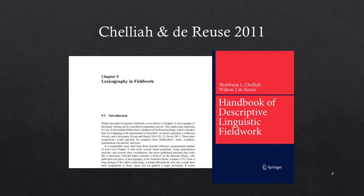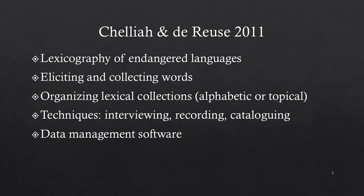Julia and DuVois in 2011 published the Handbook of Descriptive Linguistic Fieldwork, including a chapter on lexicography or dictionary making. They discuss the difference of doing lexicography in endangered languages versus major world languages, techniques for eliciting and collecting words, different approaches to organizing lexical collection in either alphabetical or topical arrangement, techniques for interviewing, recording, and cataloging lexical information, and an overview of data management software available for lexicography.